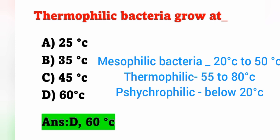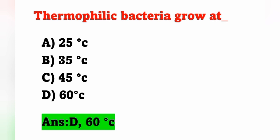Psychrophilic bacteria grow below 20°C. So there are three types: mesophilic bacteria, thermophilic bacteria, and psychrophilic bacteria. For our question, thermophilic bacteria grow between 55 to 80°C, and in our options 60°C is given, so that is the correct answer.